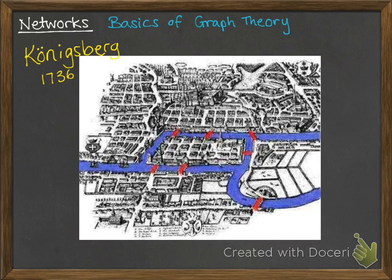We can create what's called a graph of this situation to display that information a bit more simply. For each of those landmasses we give it a dot, labelled A, B, C, D so I can talk about them easily. For each bridge we join up the dots where there's a bridge connecting those two bits of land. Between A and B we've got two bridges, between B and C two more, C and D has one, between B and D there's one, and between A and D there's one. So now we have this diagram set up to show us the connections.